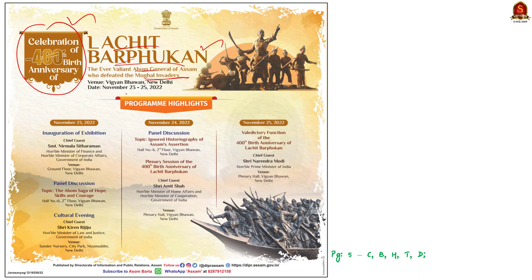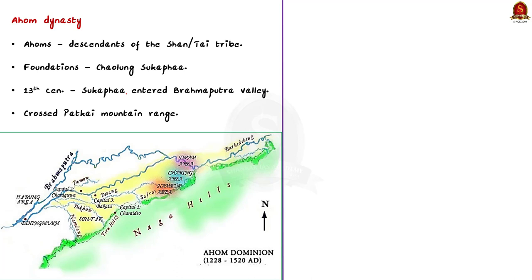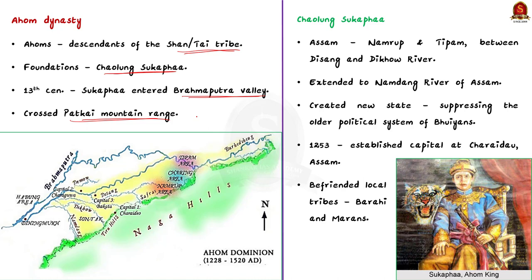The Ahoms were the descendants of the Shan or Tai tribe, who are of Chinese origin. The foundations of the Ahom kingdom were laid by Chowlung Sukhapa, considered the first Ahom king. During the 13th century, Sukhapa along with his soldiers and allied political members entered the Brahmaputra valley of Assam by crossing the Patkai Bum mountain range. Sukhapa created a new state by suppressing the older political system of the Bhuyants, who were the local landlords present in Assam at that time.